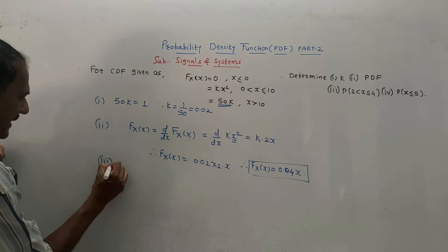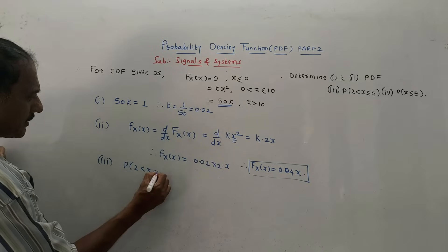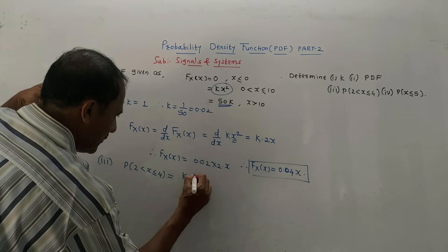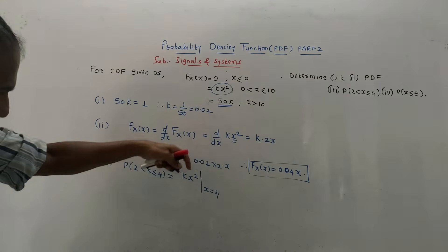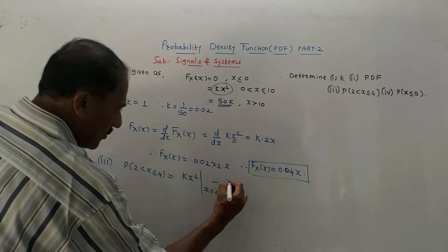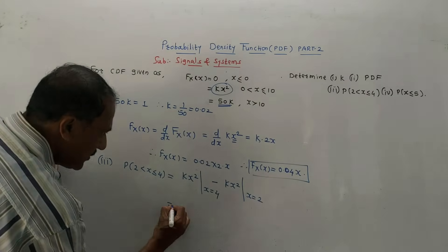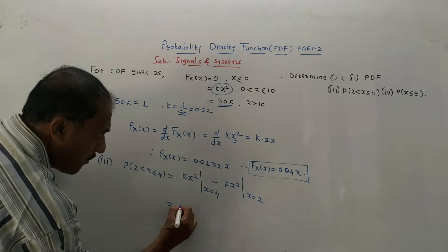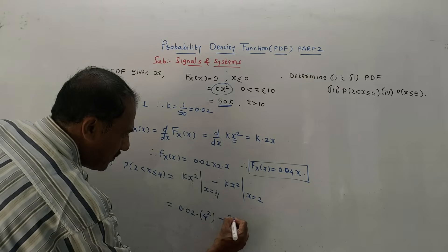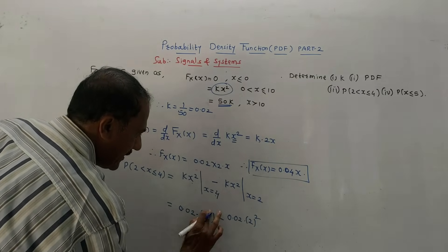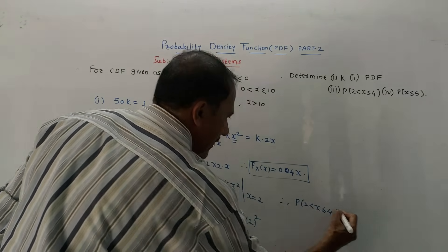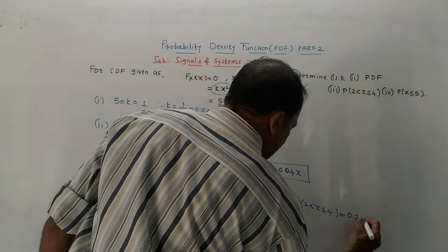Third part: calculate probability in the range 2 to 4. Put upper limit first, then lower limit in the CDF equation K·X². So it is K·X² at X equals 4, minus K·X² at X equals 2. That gives 0.02 into 16 minus 0.02 into 4, which equals 0.32 minus 0.08. The final answer, probability between 2 to 4, is 0.24.